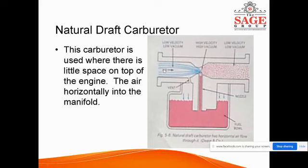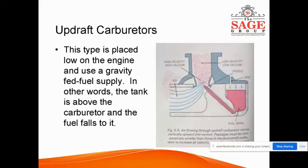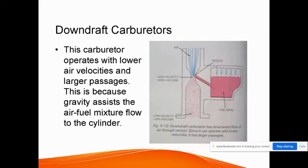Secondly, we have the updraft carburetor. This type is placed low on the engine and uses a gravity-fed fuel supply. In other words, the tank is above the carburetor and the fuel falls down to it. This is the updraft carburetor.